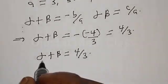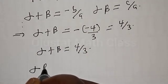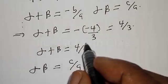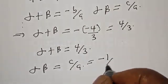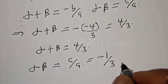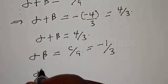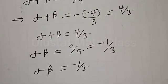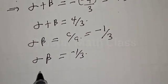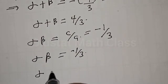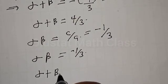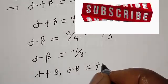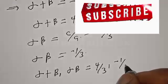Also, alpha beta, which is the product of the roots, is equal to c over a. Our c is -1 and our a is 3. Therefore alpha beta is equal to -1 over 3. Our final answer is: alpha plus beta = 4/3 and alpha beta = -1/3.